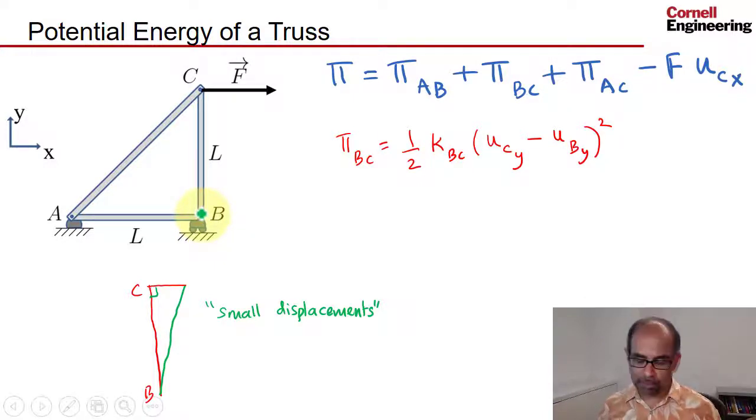Now I know what you're thinking—pin B cannot move in the vertical direction. That's true, but the trick is to apply the boundary conditions at the very end after you have done the minimization of potential energy. I hope that explains how you get this term.